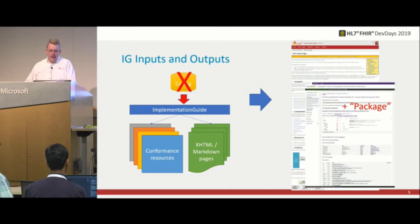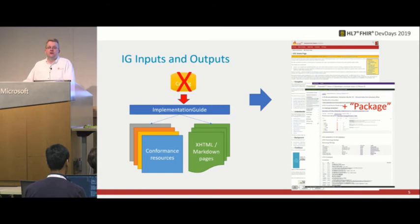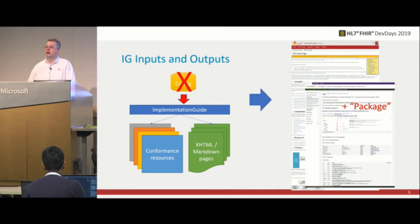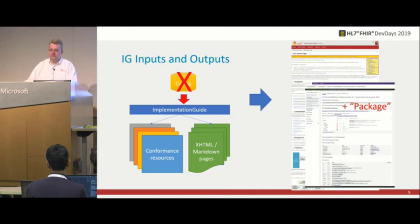We start with a configuration file, but we're moving away from that to only using the implementation guide resource. We take a bunch of conformance resources, some stand-alone web pages discussing security rules, use cases, and acknowledgements — all of that goes into text files. You turn the crank on the IG publisher, Trifolia, or Simplifier, and you get web pages out — although in some cases you might produce a PDF, which some regulatory processes may require.